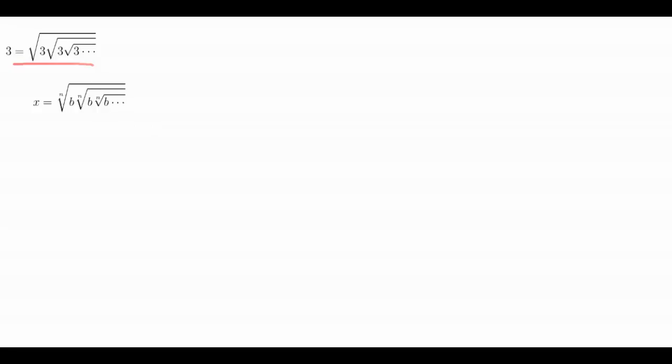So the first thing to note in the algebraic method is how we can write our radical. The nth root of b can be written as b to the 1 over n. And using this here and applying it to this equation we can yield the following.